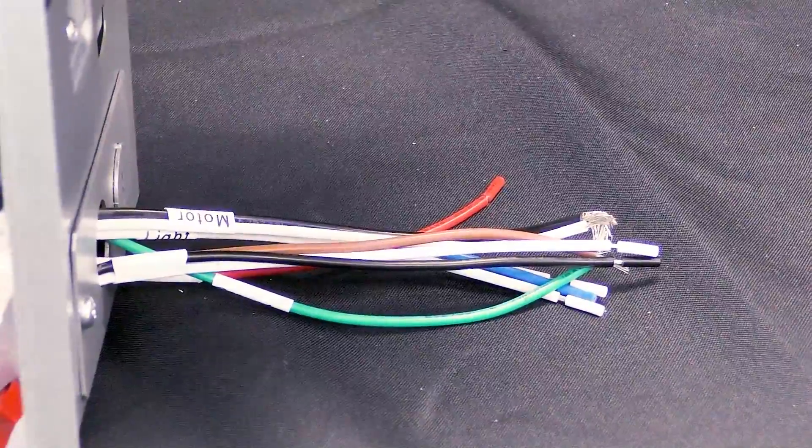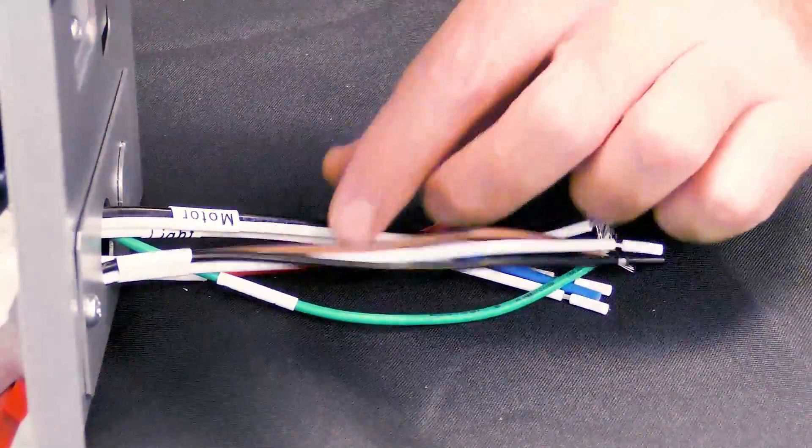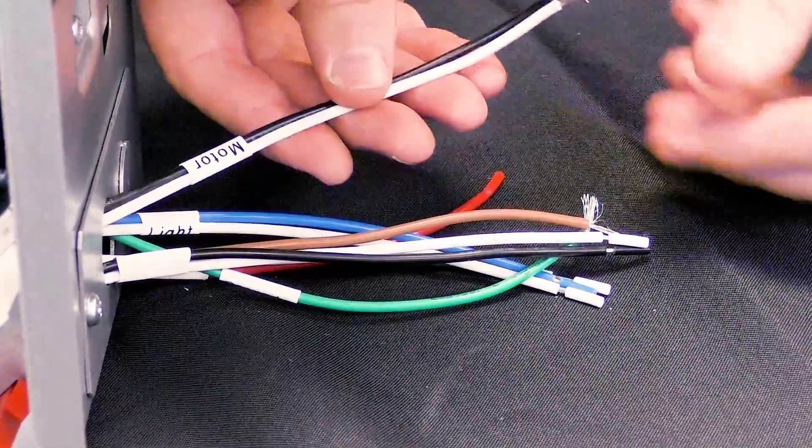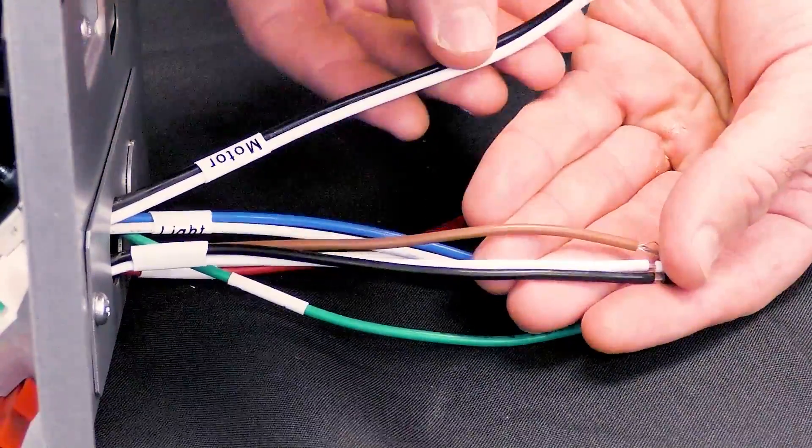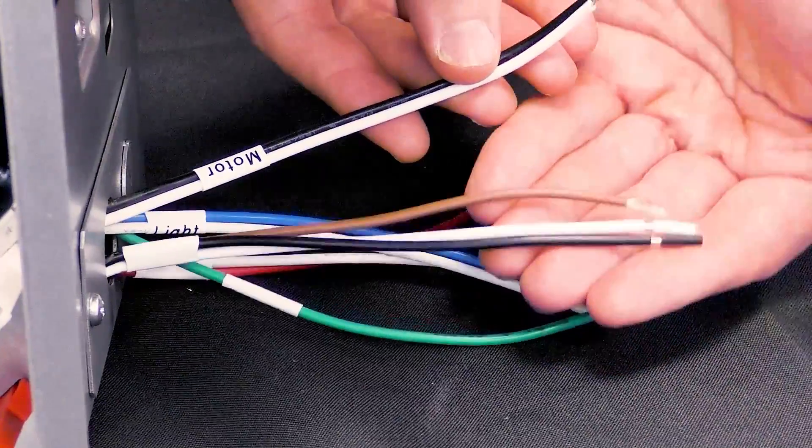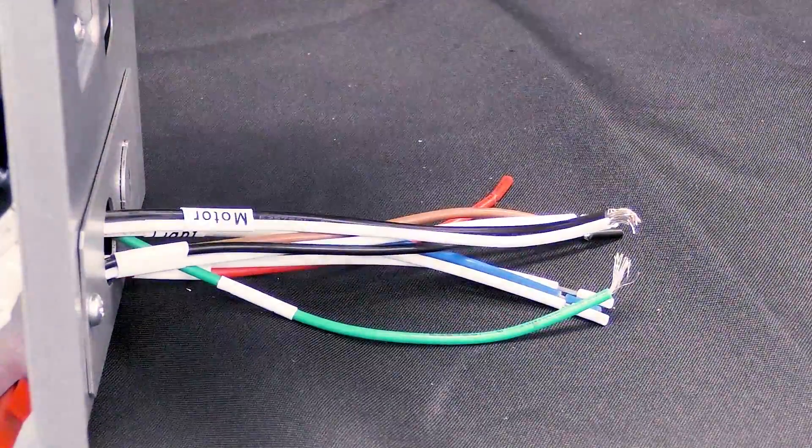Next, locate the motor wiring harness composed of black and white wires. It will be labeled as motor. Then, locate the harness composed of brown, black, and white wires that's connected to the plug-and-play module of your choice.